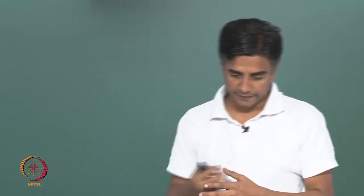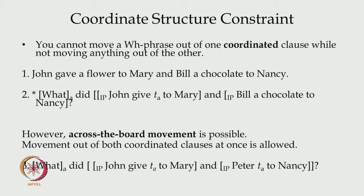However, movement out of both coordinated clauses at once is allowed — this is called across-the-board movement. So 'What did John give to Mary and Peter to Nancy?' is fine, because the extraction is from both clauses simultaneously. Just as we extracted the verb and left two coordinated clauses, we can question from both at a time. But you cannot question one and leave the other — that results in ungrammaticality. We use these kinds of sentences in day-to-day life; it is just that someone has looked at them more carefully.